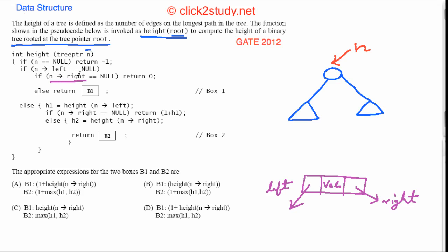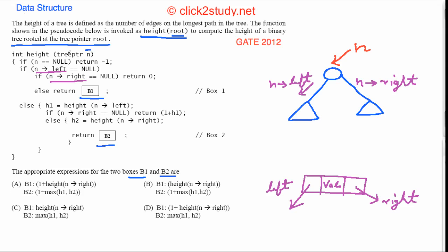In the pseudocode you see n->left and n->right — these are the left and right pointers of a node in C notation. So n->left is the left child pointer and n->right is the right child pointer. The pseudocode has two empty boxes, B1 and B2, which we need to fill in by choosing from the given options.